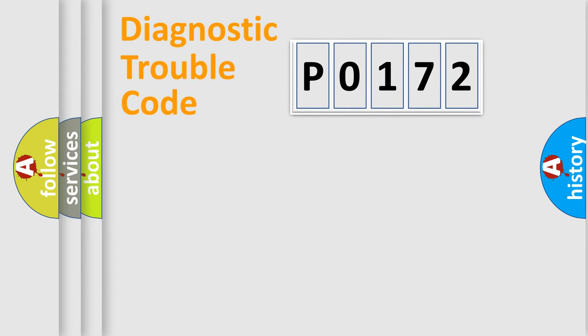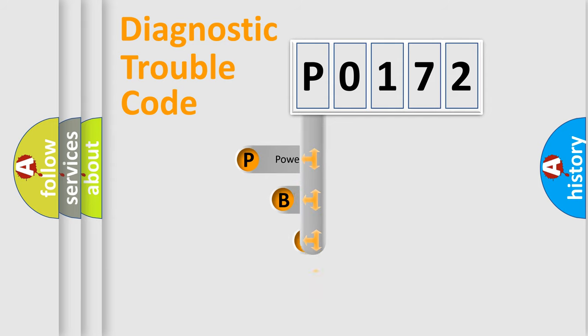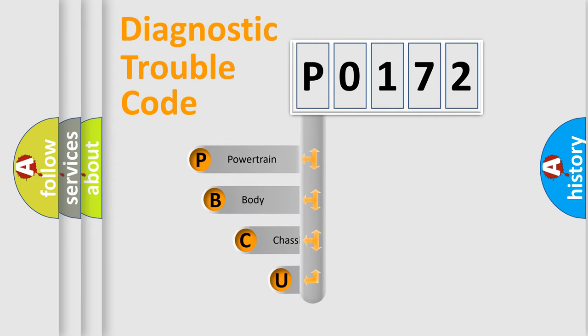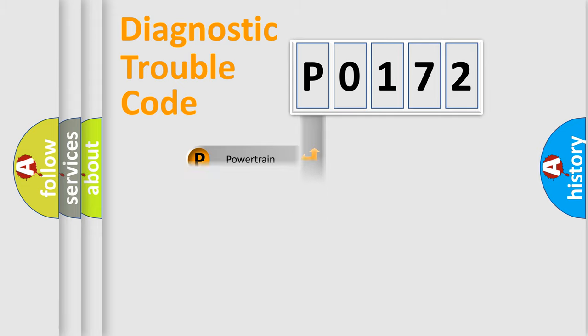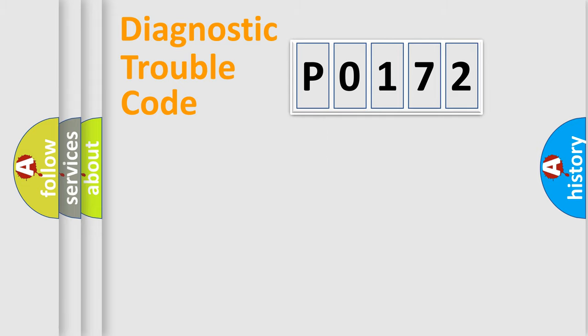Let's do this. First, let's look at the history of diagnostic fault code composition according to the OBD2 protocol, which is unified for all automakers since 2000. We divide the electric system of the automobile into four basic units: Powertrain, Body, Chassis, and Network.